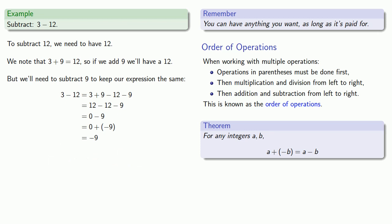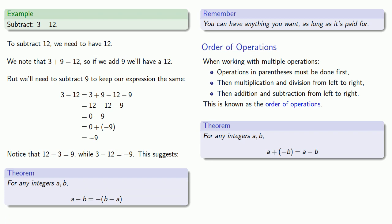Once again we might make the observation: the numbers 3, 12, and 9 are related. 12 minus 3 is 9 while 3 minus 12, what we just found, is the additive inverse of 9. This suggests another theorem: for any integers a and b, a minus b is the same as the additive inverse of b minus a.